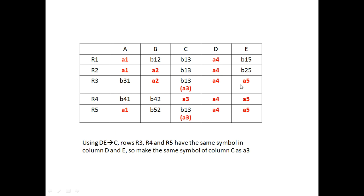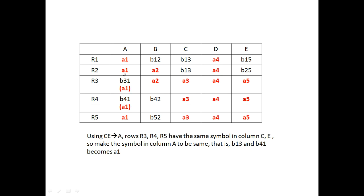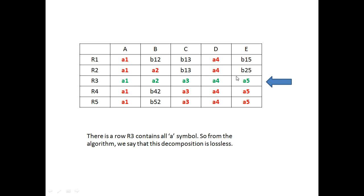After applying D→C, rows R3, R4, R5 have the same symbol in column D and E. Using FD CE→A: rows R3, R4, and R5 have the same symbols in columns C and E, so we make the same symbol in column A — updating b31 and b41 to a1. We get that row R3 now contains all a-values (a1, a2, a3, a4, a5). From this algorithm we say that this decomposition is lossless.